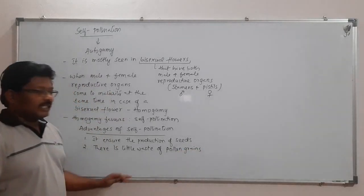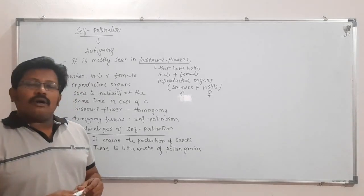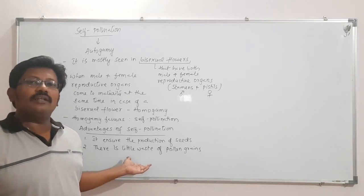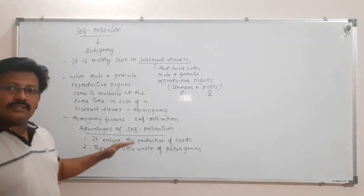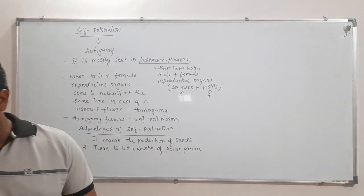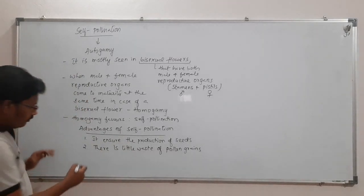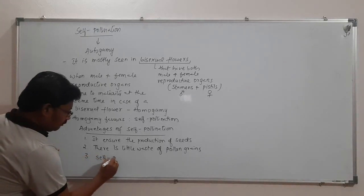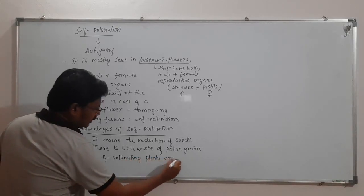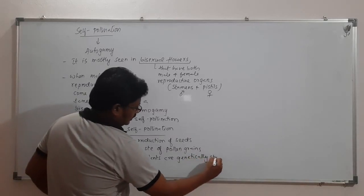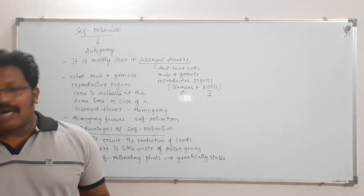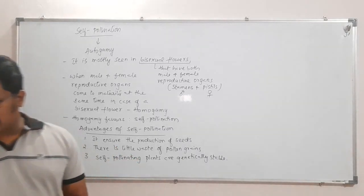There is little waste of pollen grains in self-pollination, because pollen grains need not be carried over long distances, so they will not be wasted. Additionally, self-pollinating plants are genetically stable — how they are genetically stable we will discuss in the coming classes.